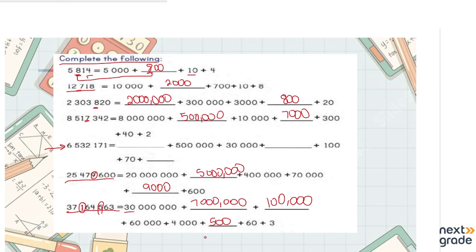This is how you can identify place values by doing the expanded form, and you can read and write them. I hope you understood today's lesson. We will be moving on to nine-digit numbers in the next video. See you guys later.